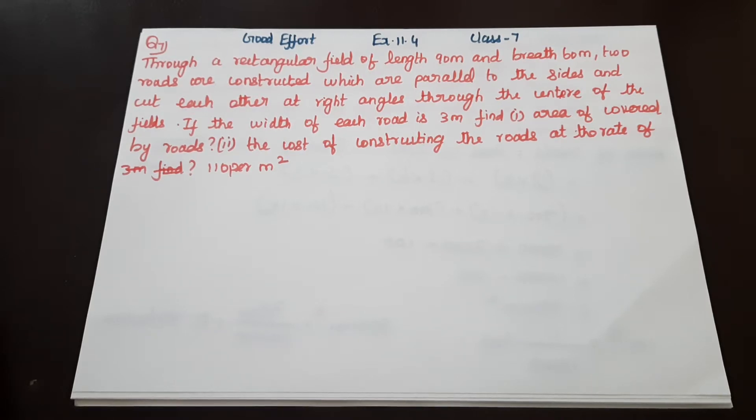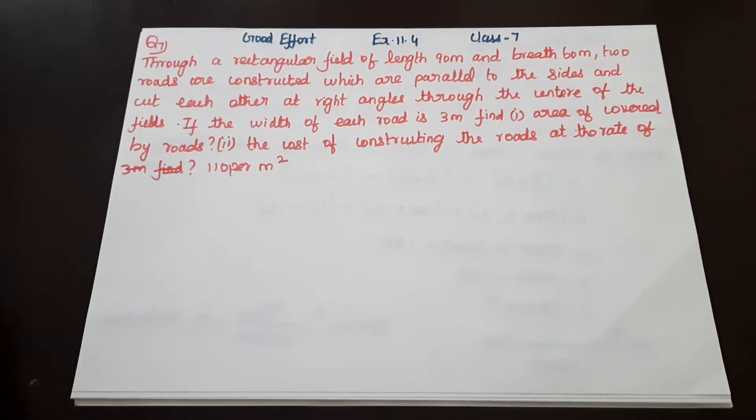Through the rectangular field of length 90 meter and breadth 60 meter, two roads are constructed which are parallel to the sides and cut each other at right angles through the center of the fields. If the width of each road is 3 meter, find area covered by roads. The cost of constructing the roads at the rate of 110 per meter square.